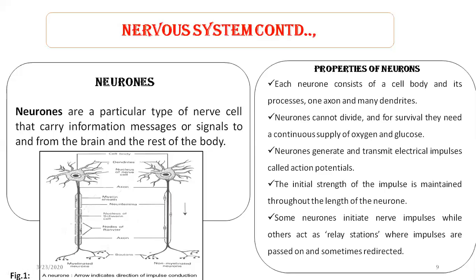Now coming to the properties of neurons. Each neuron consists of a cell body and one axon and many dendrites. Neurons cannot divide, and for survival they need a continuous supply of oxygen and glucose.